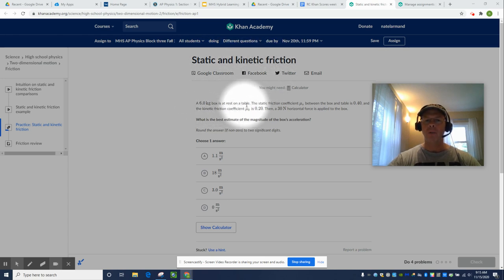A 6 kilo box is at rest on a table. The static friction coefficient, mu sub s, between the box and the table is 0.4. And the kinetic friction coefficient, mu sub k, is 0.2.